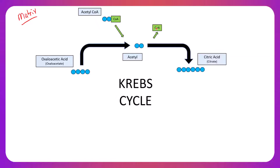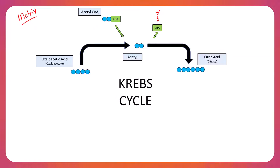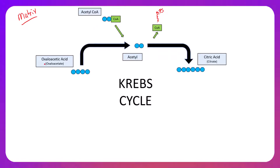It is important to note that coenzyme A acts as an usher — it joins the acetyl, which is the two-carbon compound, just long enough to usher it into the Krebs cycle before it leaves. The coenzyme A will leave the Krebs cycle, head back to the link reaction of the prep step, where it will grab another acetyl to usher it into the next Krebs cycle. So oxaloacetic acid, the four-carbon compound, joins the two-carbon acetyl to form a six-carbon citric acid.